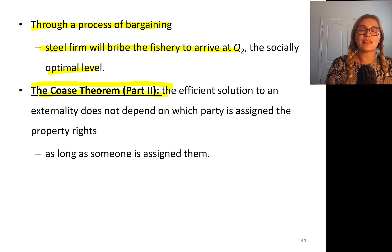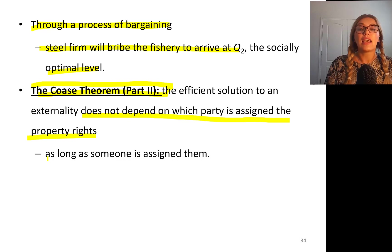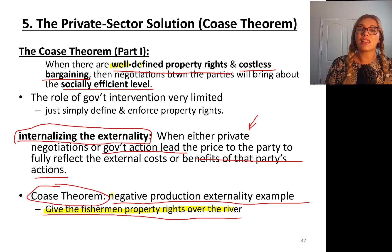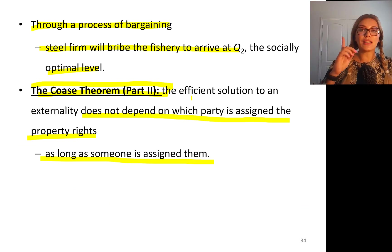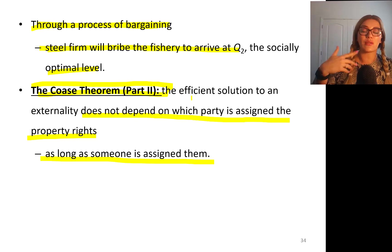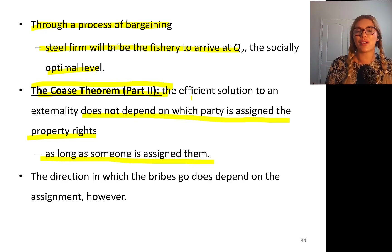Coase theorem part two says that the efficient solution to an externality does not depend on which party is assigned the property rights. As long as someone is assigned property rights — part one is operational — and there are well-defined property rights and costless bargaining, negotiations between parties will result in the socially efficient level. If you're taking this public finance class, professors love to ask about Coase theorem part one and part two verbally, so you may want to memorize these two parts.